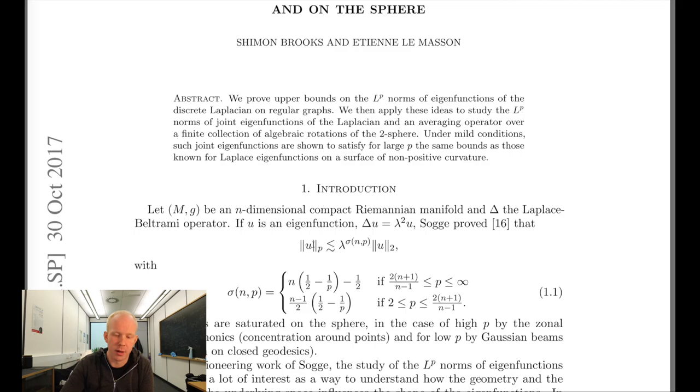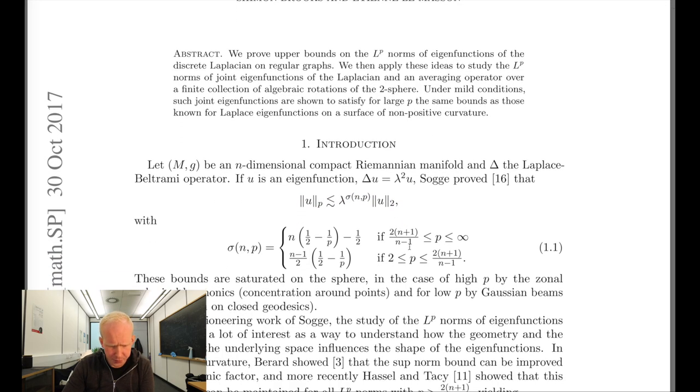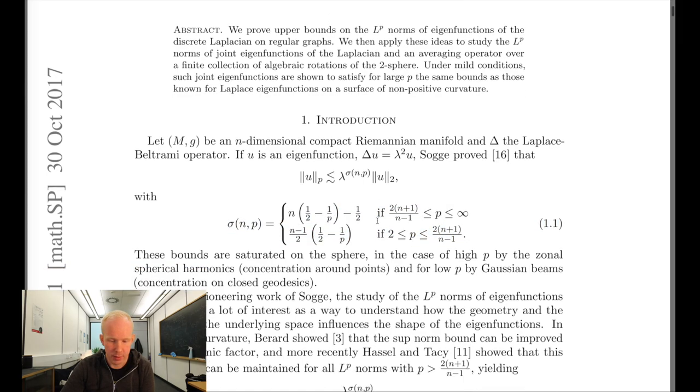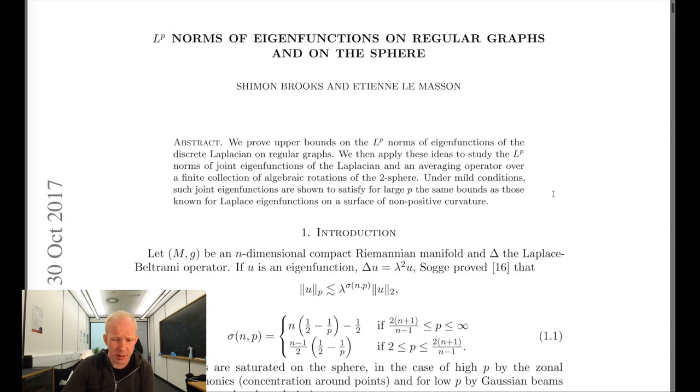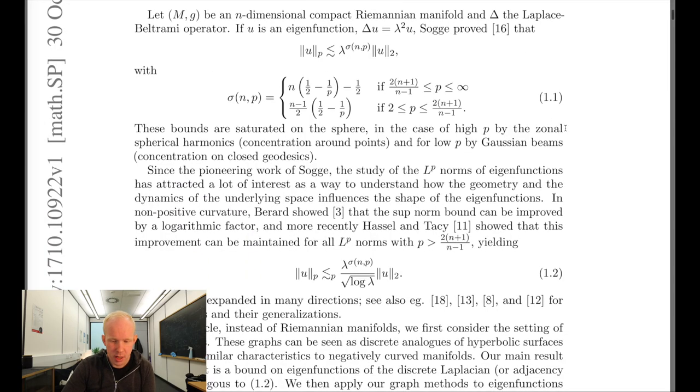If you take the LP norm of an eigenfunction of the Laplacian with certain eigenvalue lambda squared, you will have this dependence. There are some estimates of the constants that you get on different values of p.